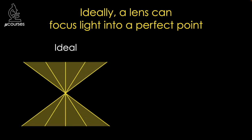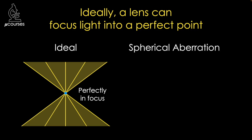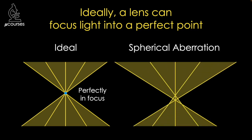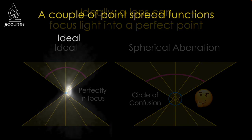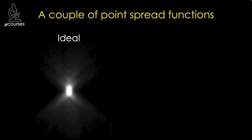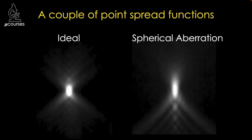Ideally, a lens is able to focus light into a single focal plane. When spherical aberration is present, light comes into focus at different planes, resulting in what is referred to as the circle of confusion. In an ideal lens, light maintains a spherical shape as it comes in and out of focus. Spherical aberration results in a deviation from the spherical shape, hence the name. A three-dimensional volume of images of a point source of light — here we're looking at an axial view — reveals the point spread function of the microscope and any aberrations that might be present.